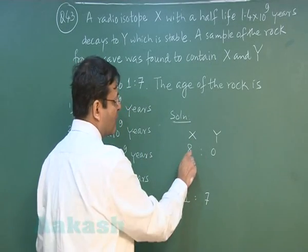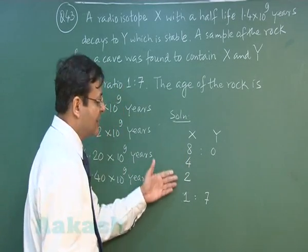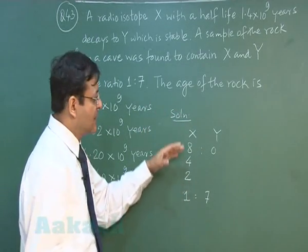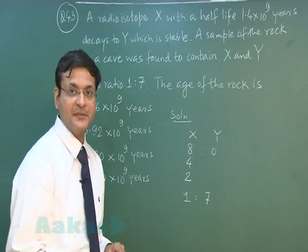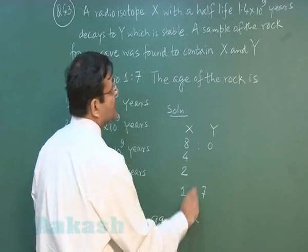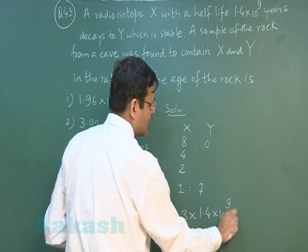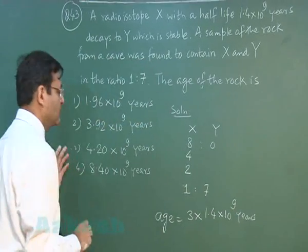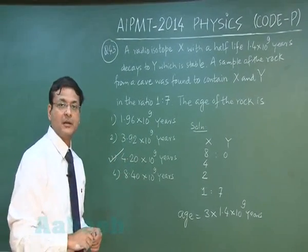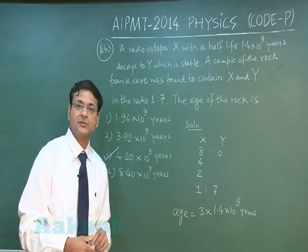Now from 8 after one half life it must have come to 4, for another half life it must have come to 2, and for the next half life it has come to the value 1. That means from the beginning to this stage it has passed 3 half lives, so the age will be nothing but 3 times the half life value that is 1.4 into 10 to the power 9 years. And for that matter the most appropriate answer will be the third option that is 4.2 into 10 to the power 9 years.